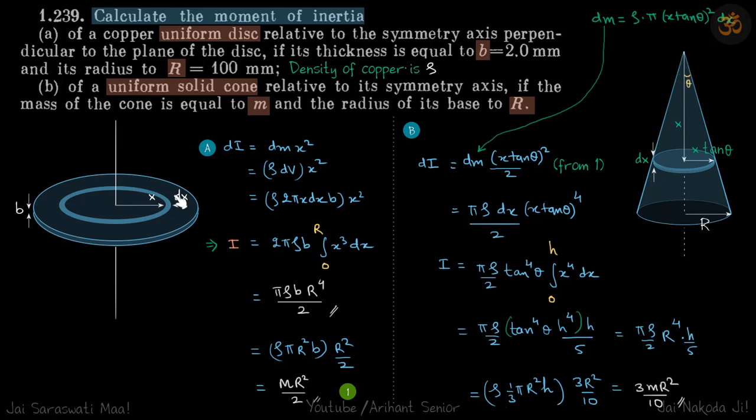We're going to use the result we derived for the disc. We'll split this cone into small discs, calculate the moment of inertia for one disc about the axis, and then integrate all these discs to get the final moment of inertia.